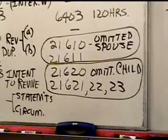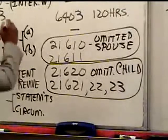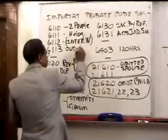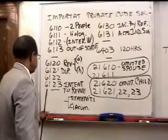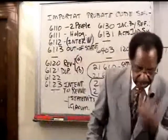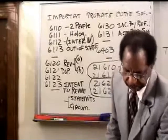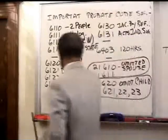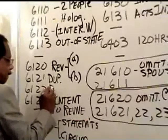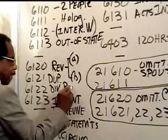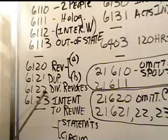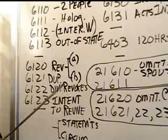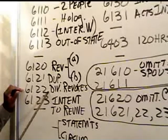That's a review of the probate codes — I didn't note §6113 for the out-of-state cases, but that's covered. Section 6122: if you get divorced, the divorce revokes the will as to anything given to your former spouse — you don't have to separately change it. It doesn't revoke the entire will, just the provisions benefiting the former spouse.